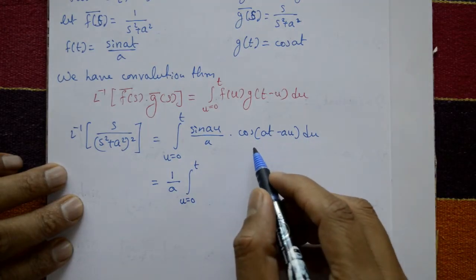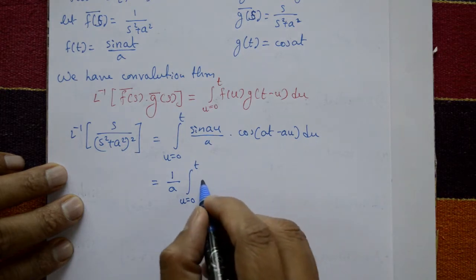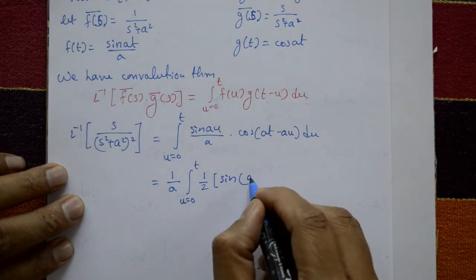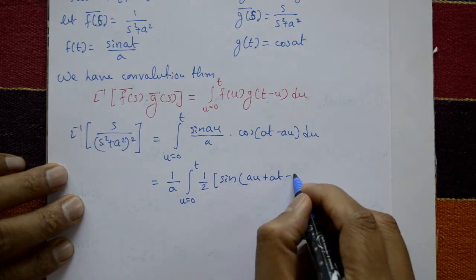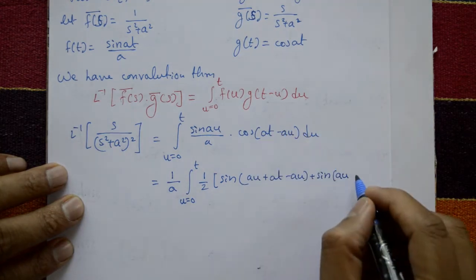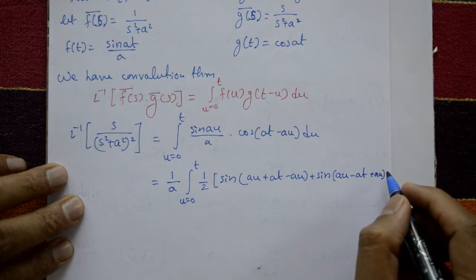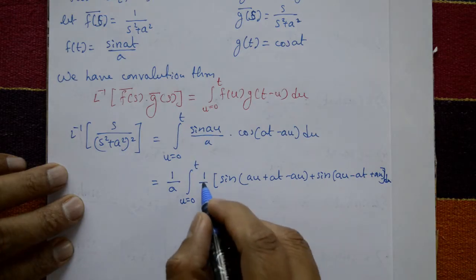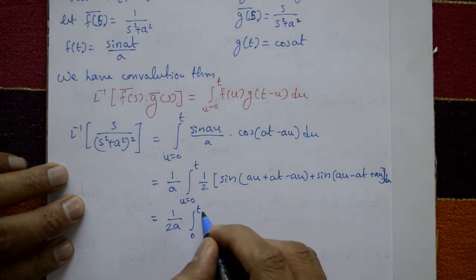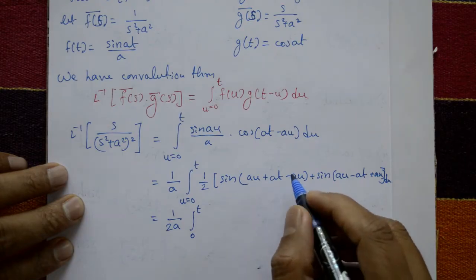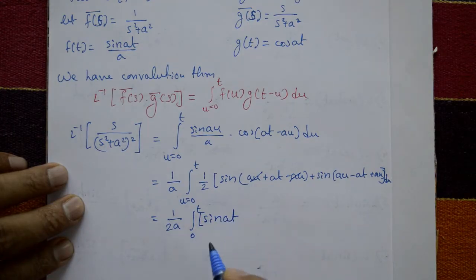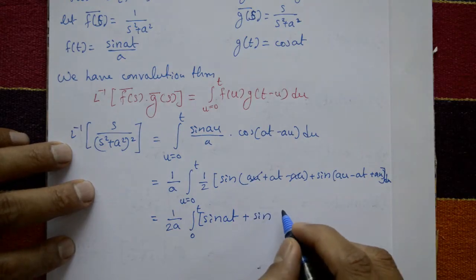Applying the sin(A)·cos(B) formula: sin(A)·cos(B) = ½[sin(A+B) + sin(A−B)]. So we get ½ times [sin(au + at − au) + sin(au − at + au)] = ½[sin(at) + sin(2au − at)], with 1/(2a) outside the integral from 0 to t.